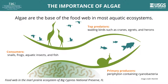Algae occur naturally and are an essential component of a healthy aquatic ecosystem. Many animals including snails, frogs, aquatic insects, and fish eat algae and are then consumed by other animals, including wading birds, higher in the food web.